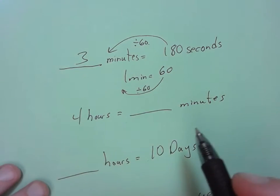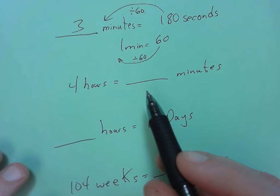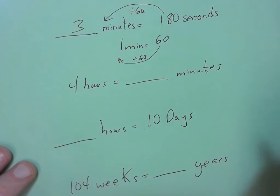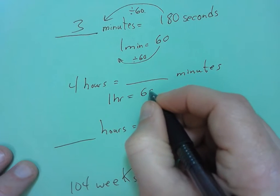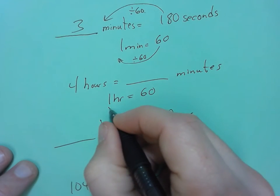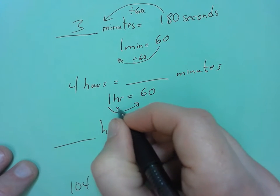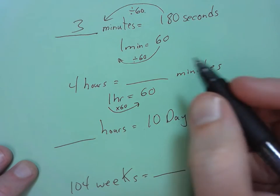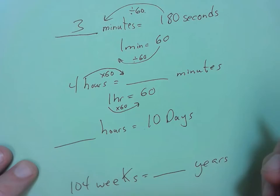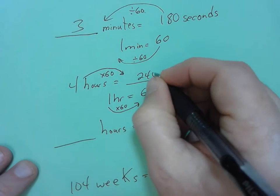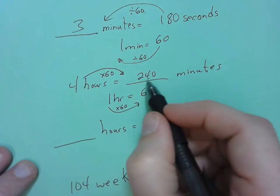Next one down, 4 hours equals so many minutes. I need to know that one hour equals 60 minutes. To go from 1 to 60, I'm going to multiply by 60. So I do the same thing up here. 4 times 60 is 240 because 4 times 6 is 24, and I add my 0 on.